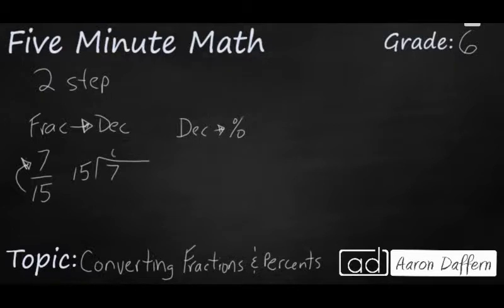And so 15 goes into 7 zero times, which we would expect, but now we put a decimal. We can add a zero, and now we can begin the work. So this is simply long division. We're going to keep adding zeros after a decimal until we find a pattern or until we run out of options. So that's going to be 90.